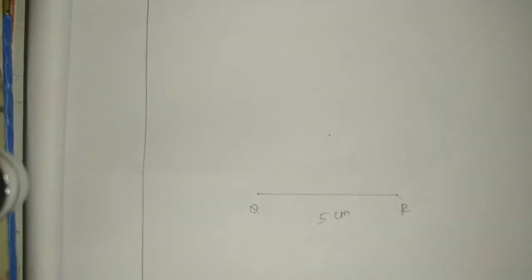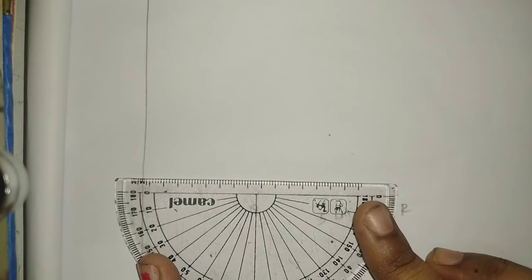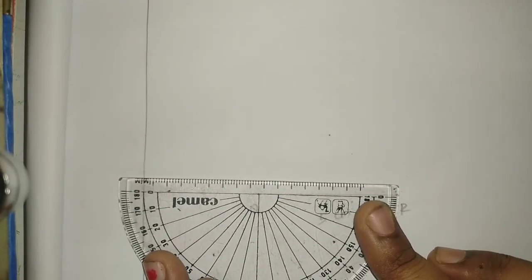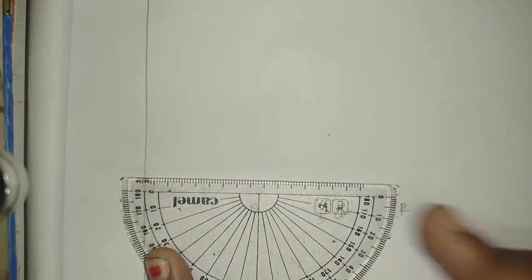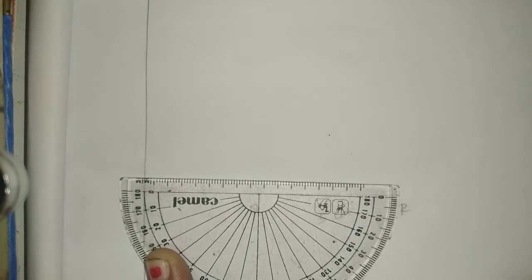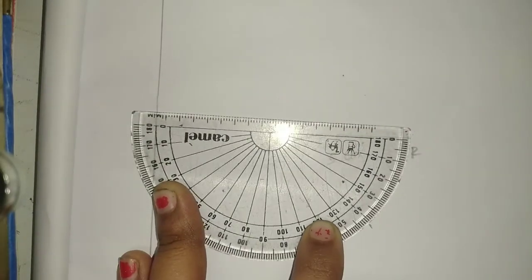Next, we need to draw the 40 degree angle. Place the protractor down and draw a line at 40 degrees from Q.